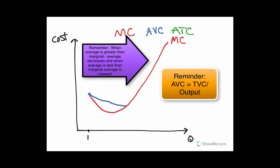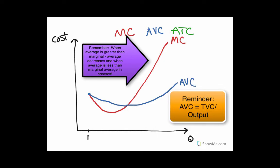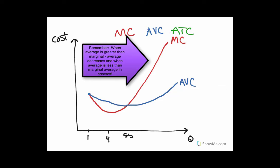As long as the marginal cost is lower than the average variable cost, average variable cost will be decreasing. Then there's a point where they intersect, and right at that point average variable cost starts increasing. I believe in the numbers before, this was at a quantity of about 5.5, and the minimum of marginal cost was at 4, from the table earlier in the video.